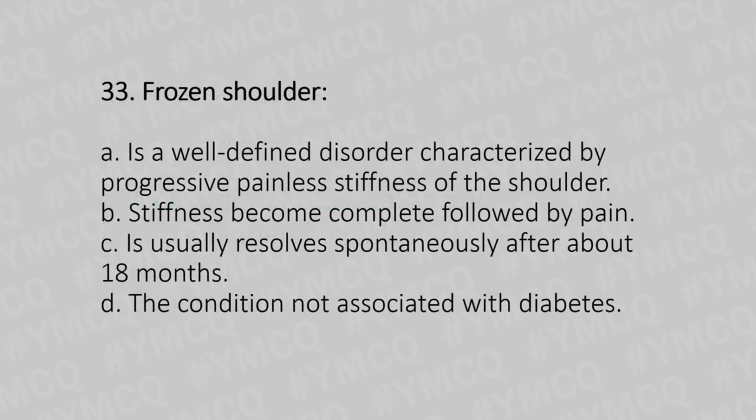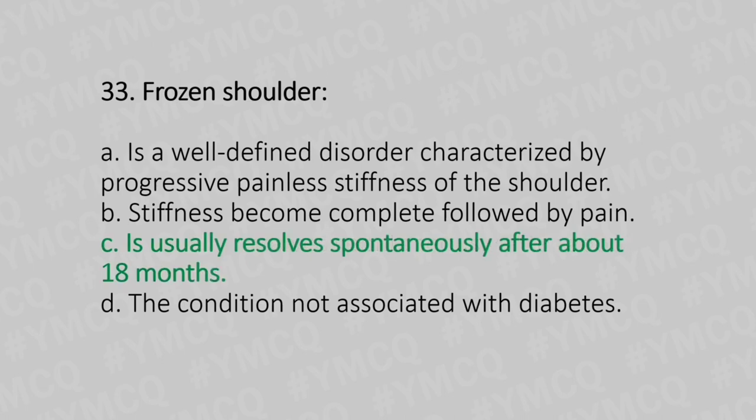Now let's move to question number 33. Frozen shoulder. Option A: is a well-defined disorder characterized by progressive painless stiffness of the shoulder. Option B: stiffness becomes complete followed by pain. Option C: is usually resolved spontaneously after about 18 months. Option D: the condition is not associated with diabetes. And the answer is Option C, it is usually resolved spontaneously after about 18 months.